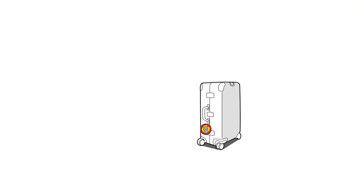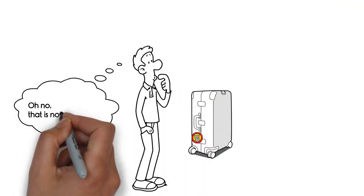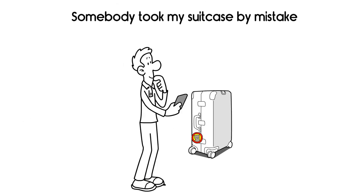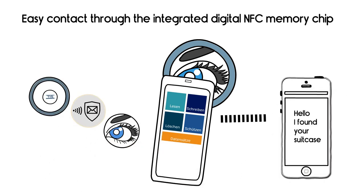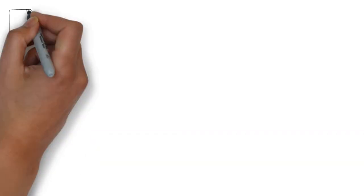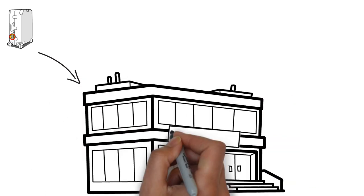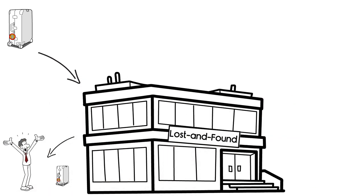And should somebody mistakenly take your suitcase, they can easily get a hold of you thanks to the handwritten contact information and the integrated digital NFC memory chip on the label. They can simply send you a message or leave your luggage at the lost and found. Either way, your suitcase finds its way back to you.